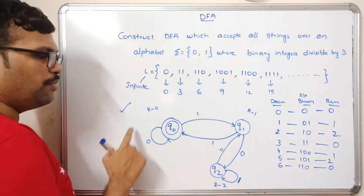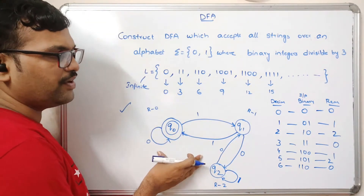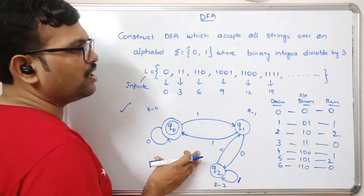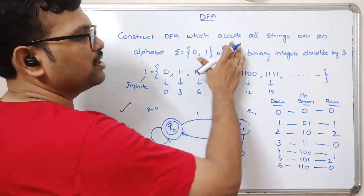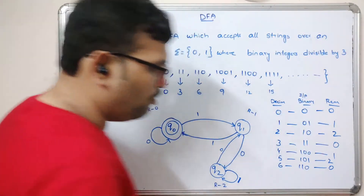So this is a complete DFA, and this is the DFA for accepting all strings where the binary integers are divisible by 3.